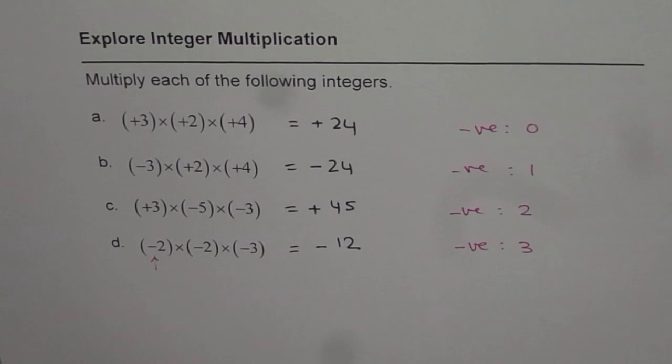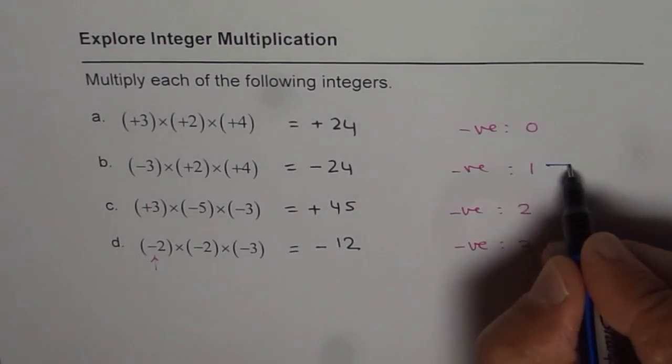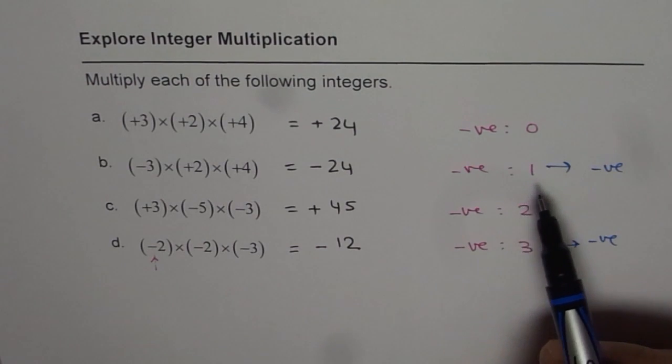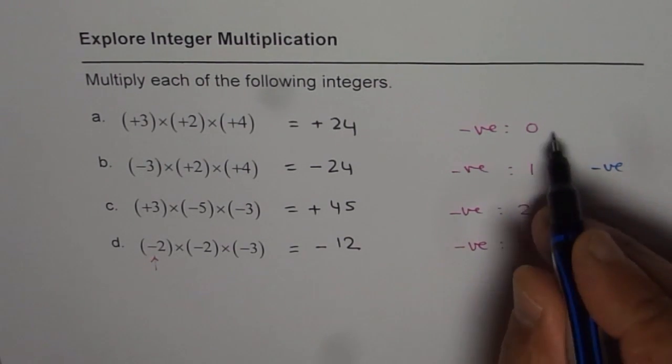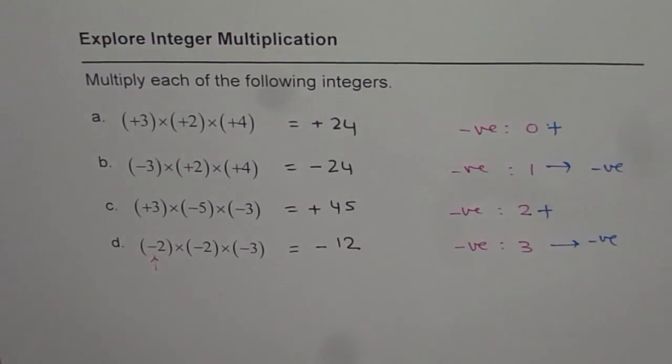Now, as you can see, we got negative sign for these two cases when the number of negative integers were one and three. That is to say, odd numbers. And in these cases, we got positive results. These are even numbers.